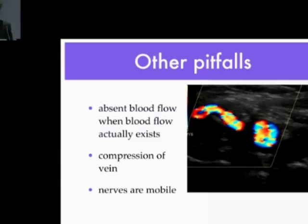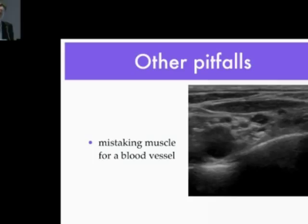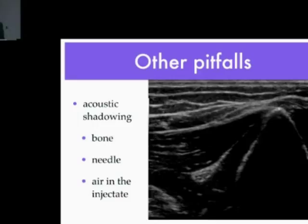Another pitfall is mistaking a muscle for a blood vessel. Just above the clavicle, a long tubular hypoechoic structure could be mistaken for a blood vessel, but it is the omohyoid muscle. Bone does not transmit ultrasound — it reflects ultrasound — so when scanning near bone, there is a lot of dropout. We must use that dropout as part of a map to orientate ourselves. There is an excellent article by Brian Seitz, 'Artifacts and Pitfall Errors Associated with Ultrasound-Guided Regional Anesthesia,' published in Regional Anesthesia and Pain Medicine — core knowledge for all practitioners.